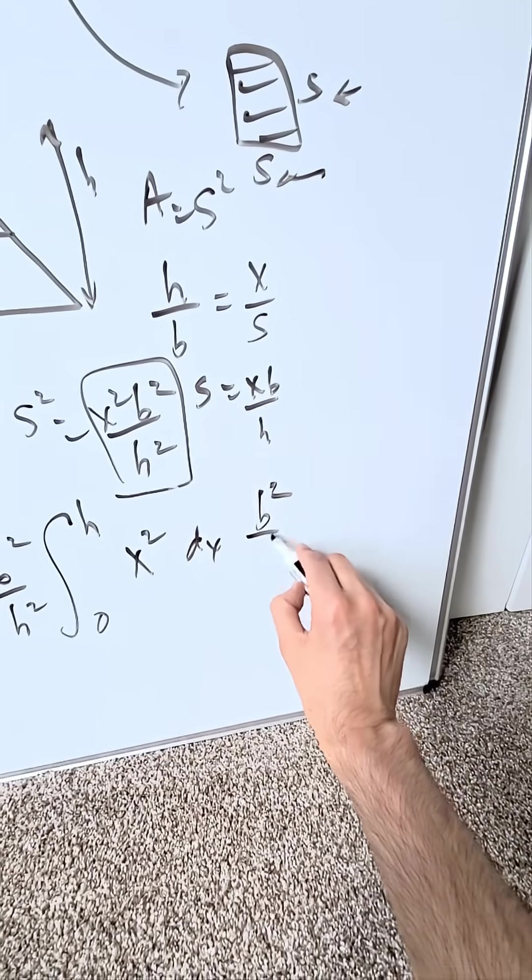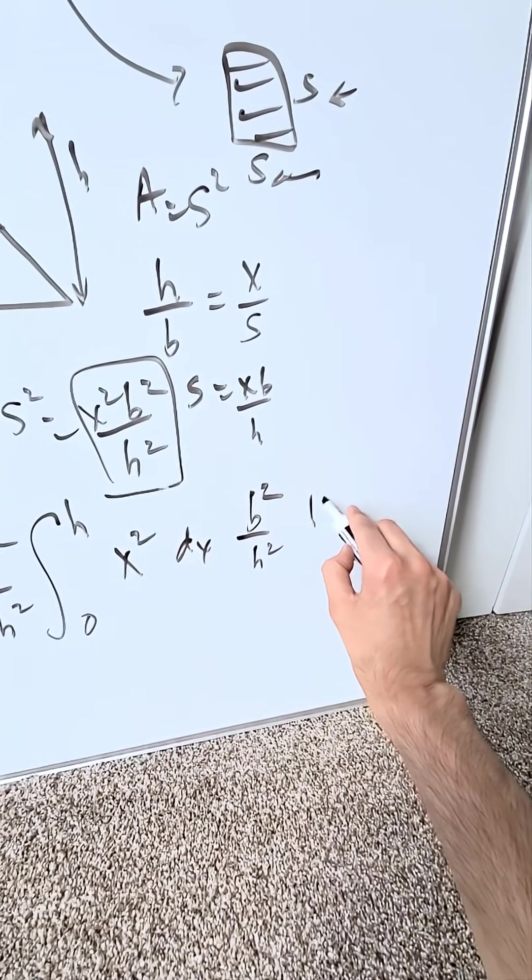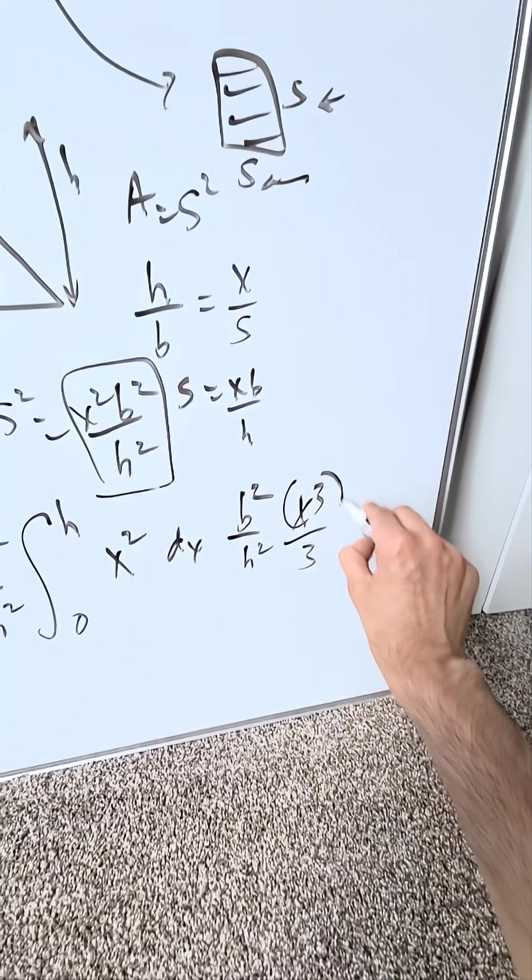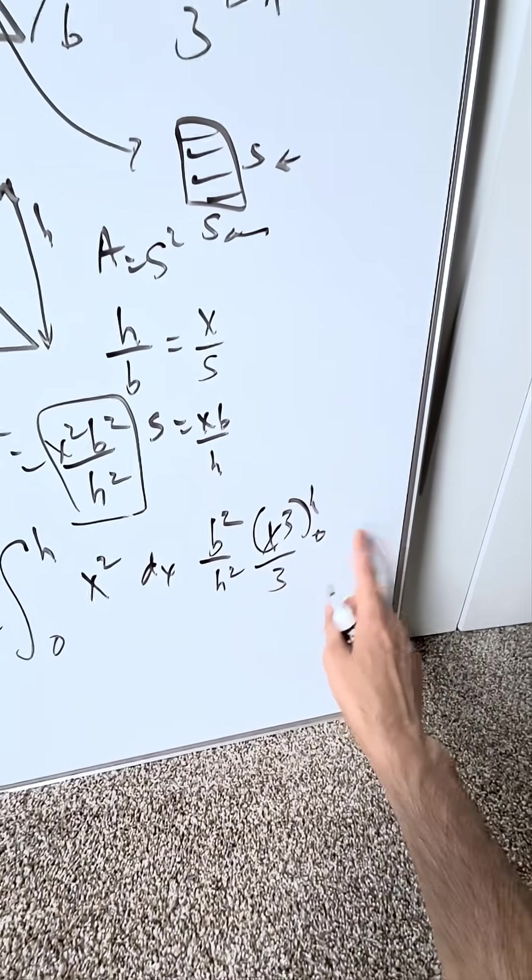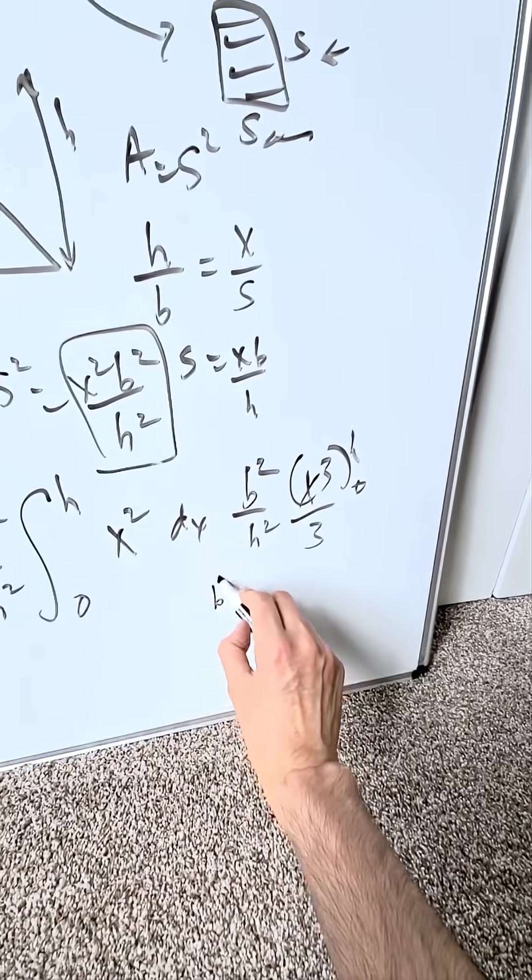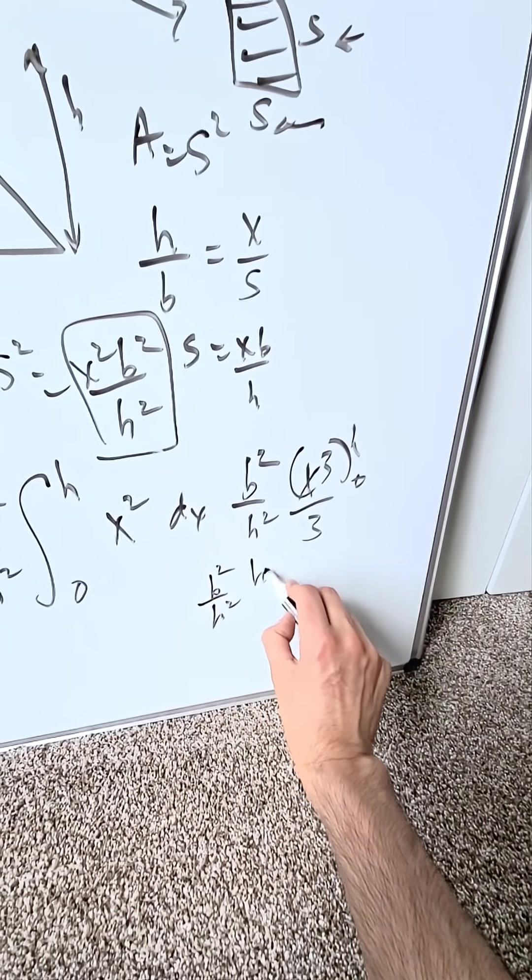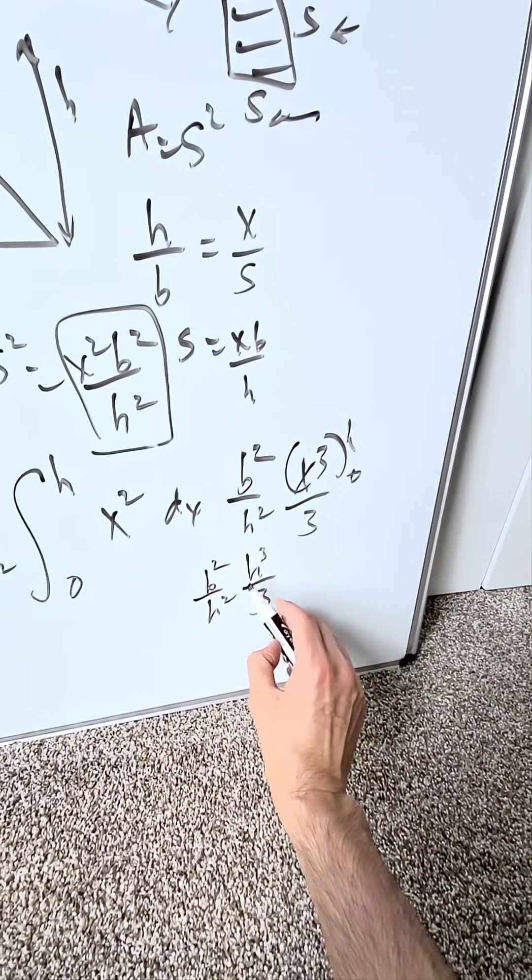When you integrate this you have b squared over h squared and you have x cubed over three, upper limit h and a zero. Put zero, it's meaningless. Put h. You have here b squared over h squared times h cubed over three. Simplify this.